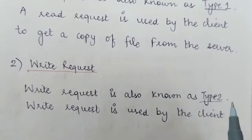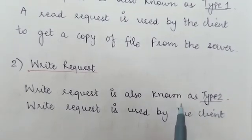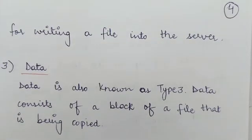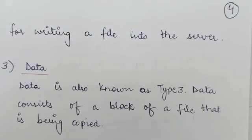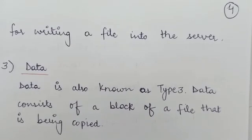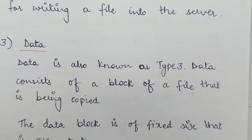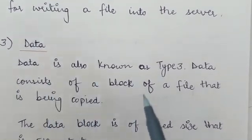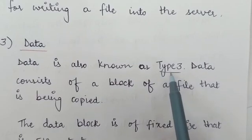The second format is the Write Request, also known as Type 2. The write request is used by the client for writing a file onto the server. As the name suggests, whenever a client wants to write a file onto the server, it uses the write request. The third format is Data, also known as Type 3.